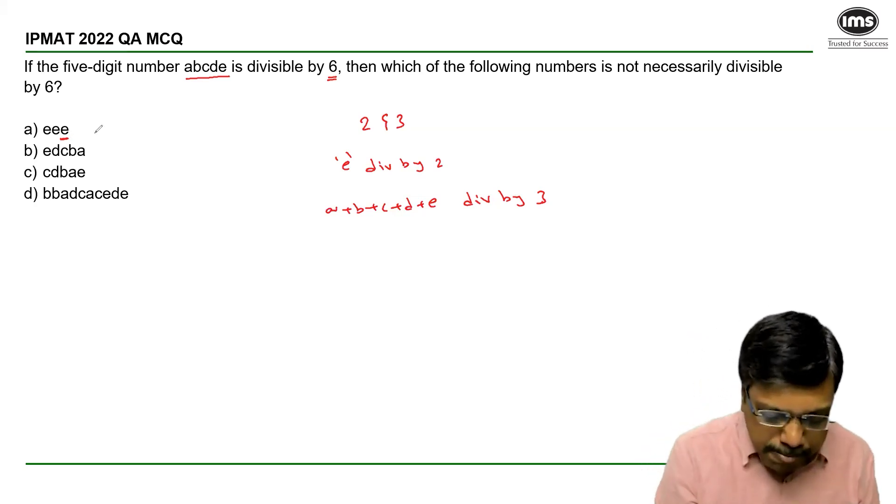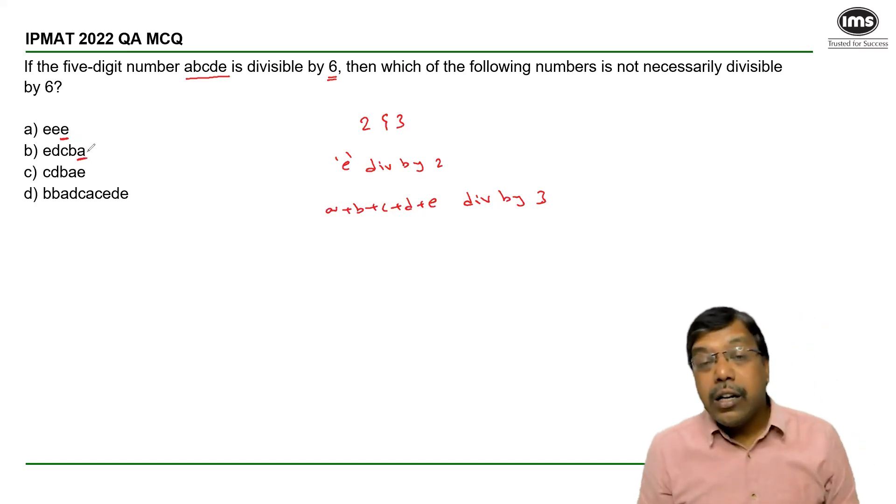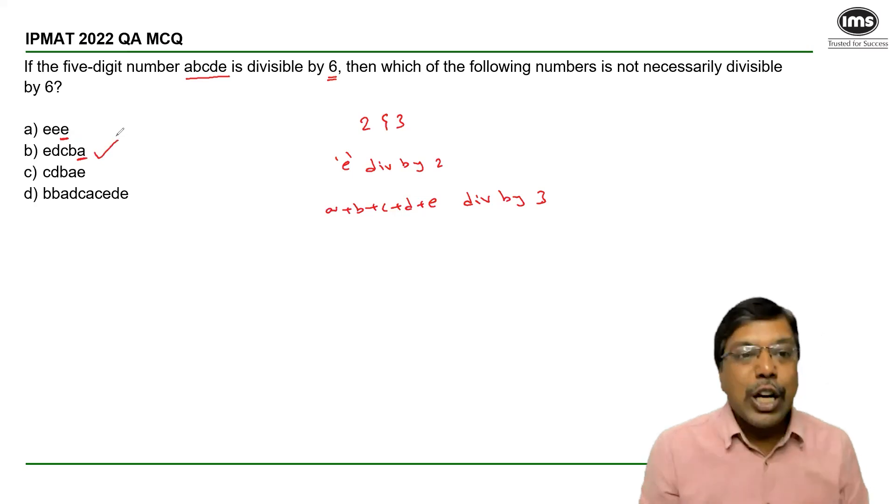Second option, the last digit is A. But since I do not know the value of A, I cannot decide whether it is divisible by 2 or not and hence whether the number is divisible by 6 or not. So the answer option is option B.